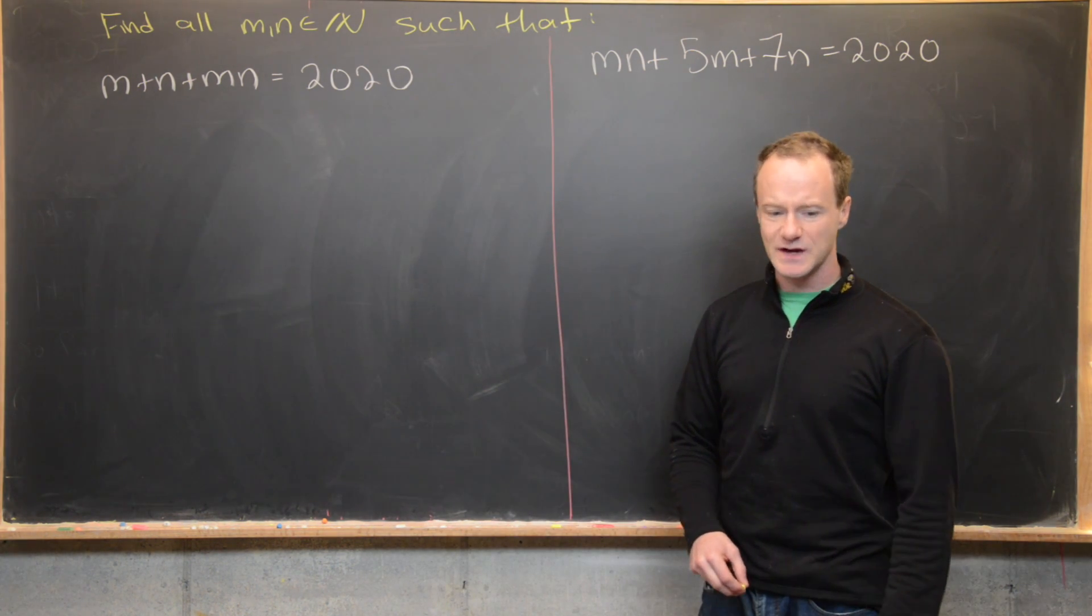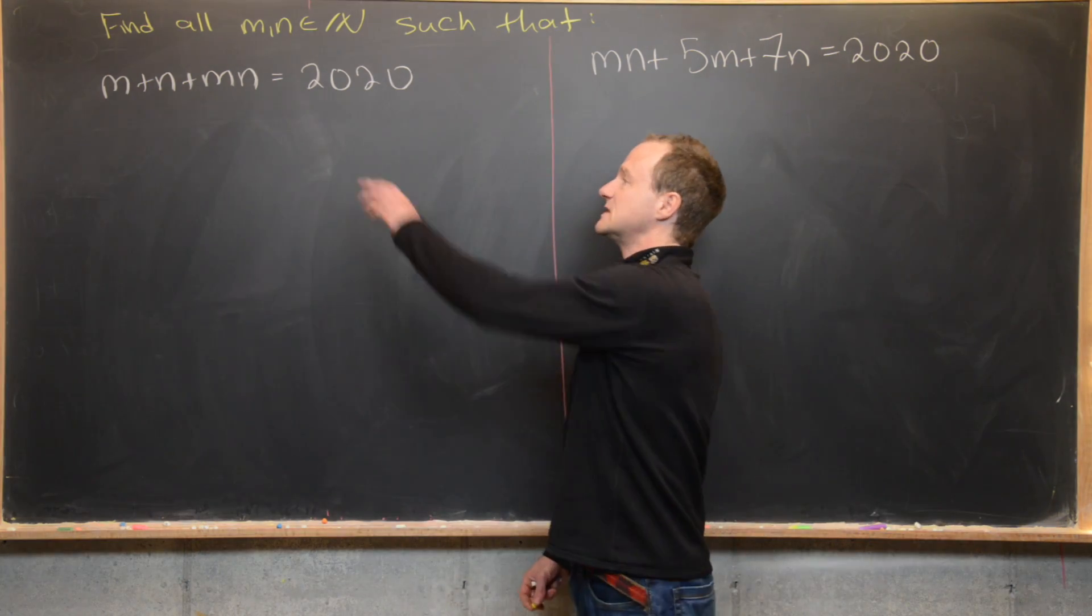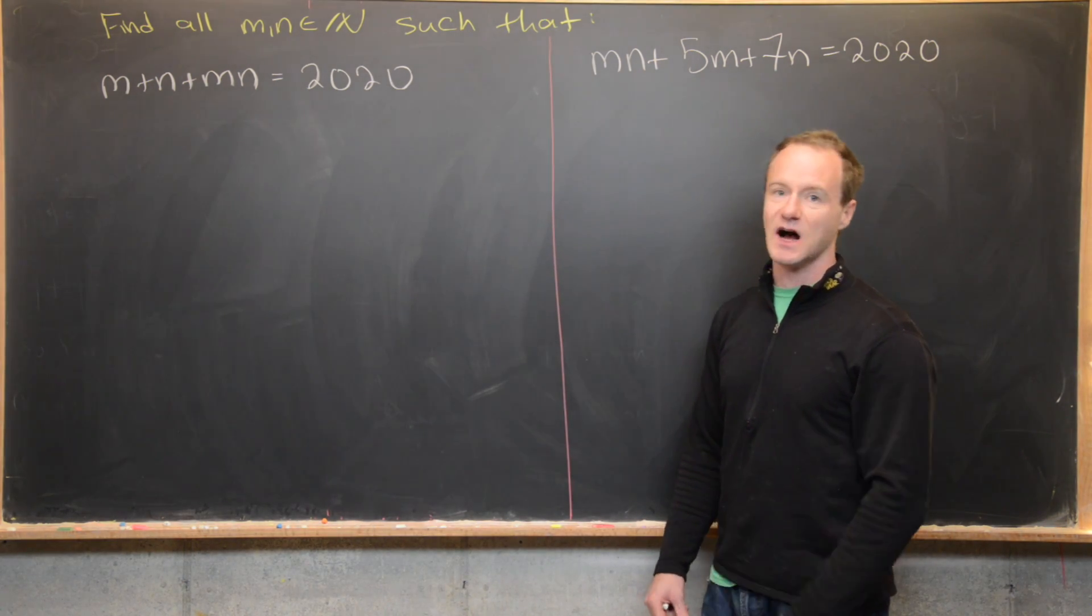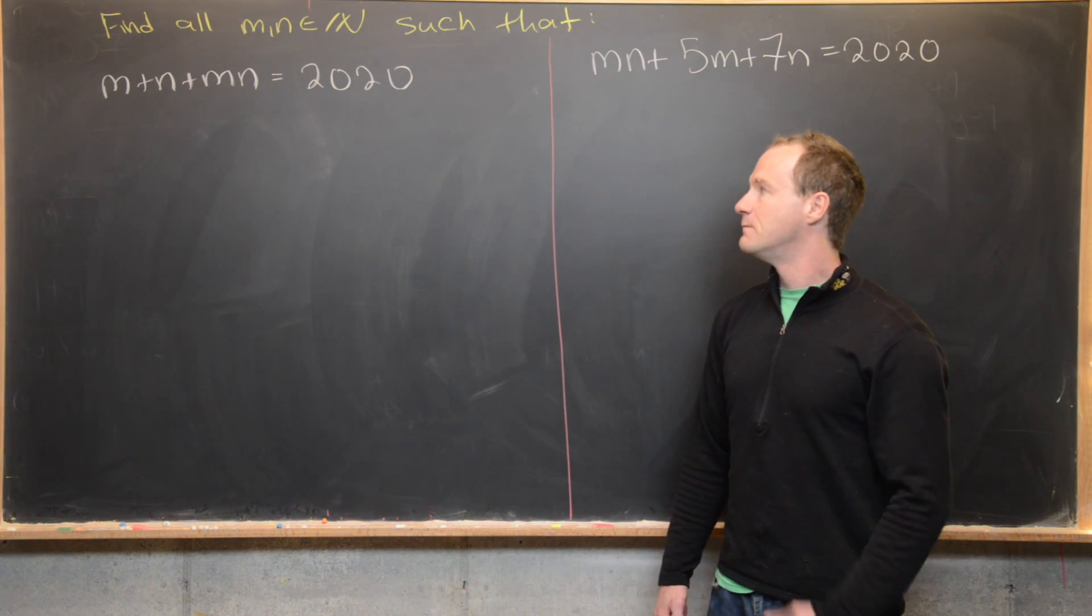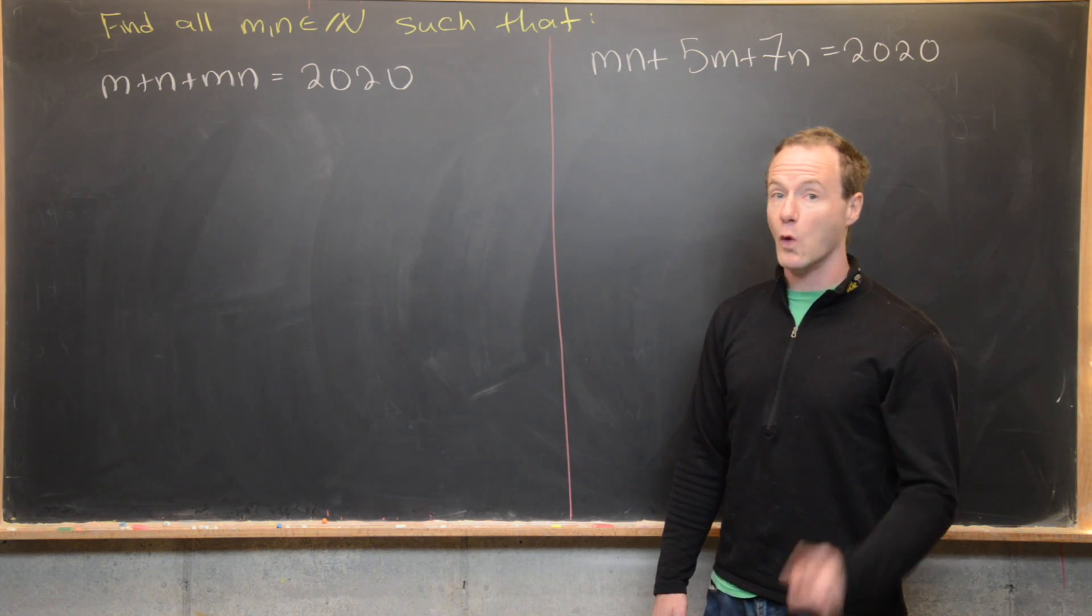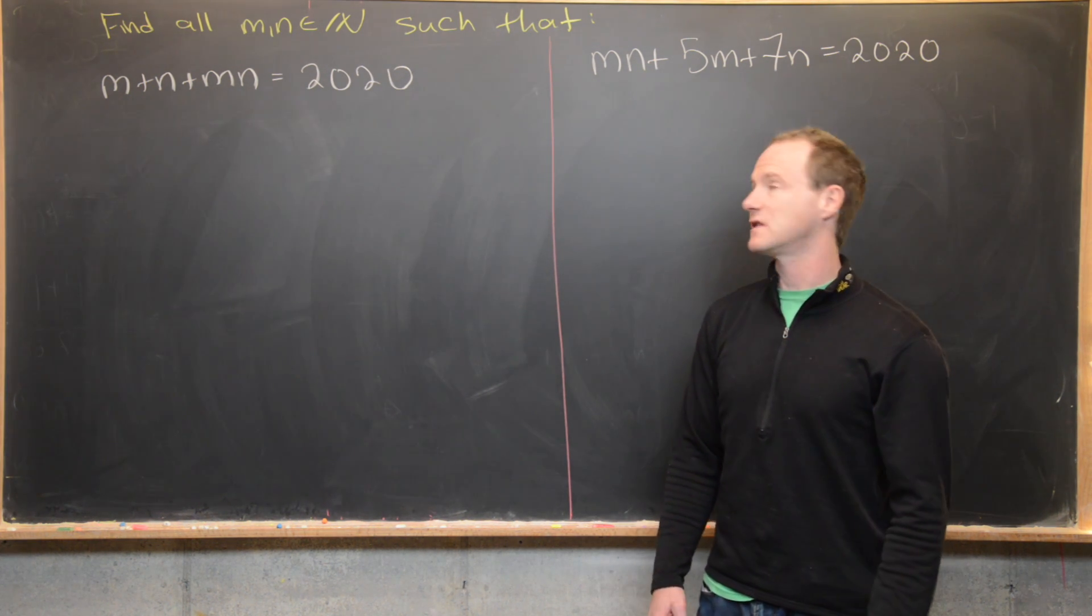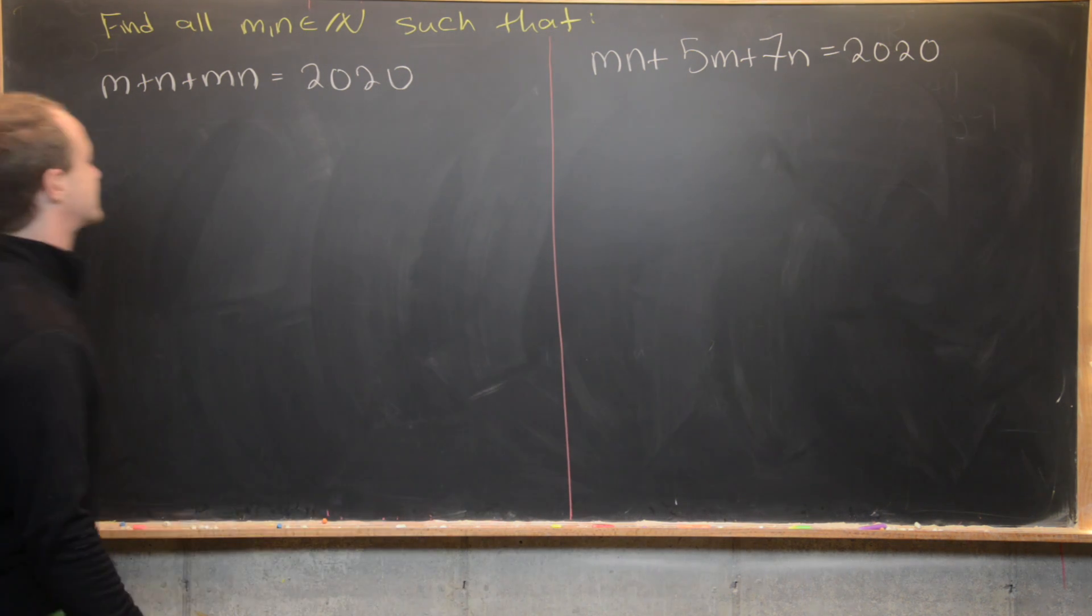Like I said, we'd like to do something which maybe we'll call complete the product, which means maybe we could add something to this left hand side so that this obviously factors. So if we look at this, maybe we could see that if we add one to the left hand side then this will factor. But if we add one to the left hand side, then we have to add one to the right hand side.